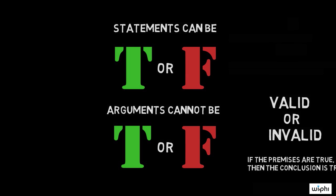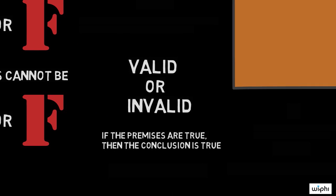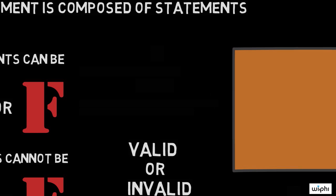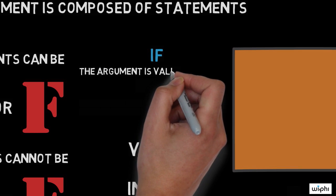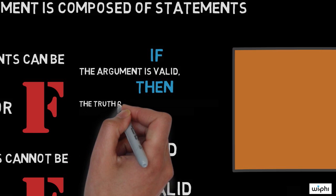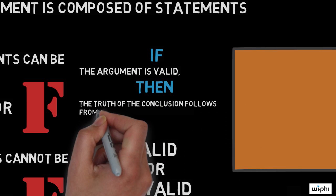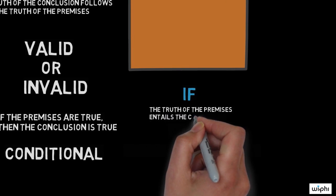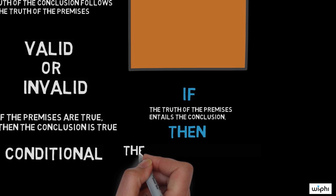Notice that I have not said that a valid argument has true or false premises or a true and false conclusion. I have said something conditional. That is, if the argument is valid, then the truth of its conclusion follows from the truth of its premises. Conversely, if the truth of the premises entails the conclusion, then the argument is valid.